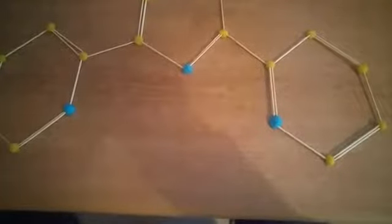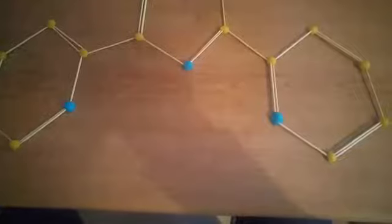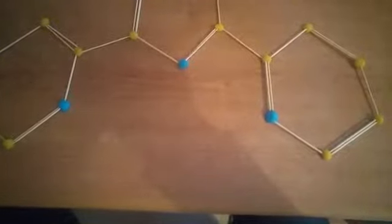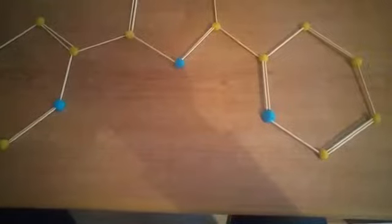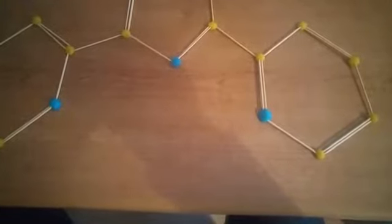The base-catalyzed reaction of 2-acetylpyridine with carbon disulfide followed by alkylation with methyl iodide gives C5H4N-CO-CH=C(S-methyl)2.